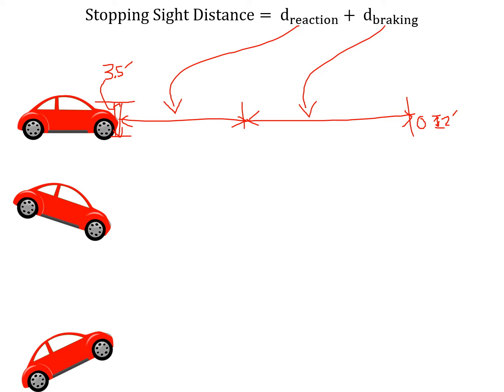Stopping sight distance can be an issue around horizontal curves where the terrain or vegetation can block the available sight distance for a driver to perceive a hazard.